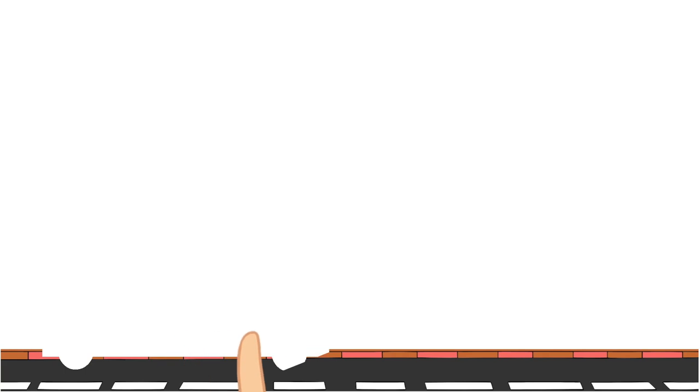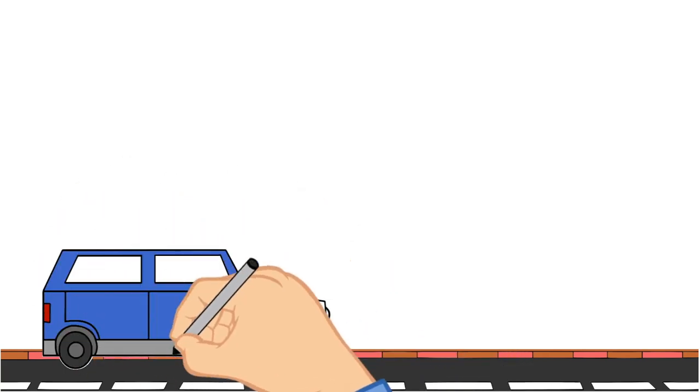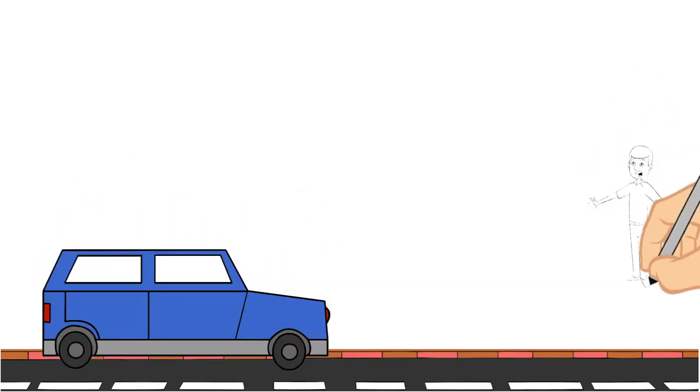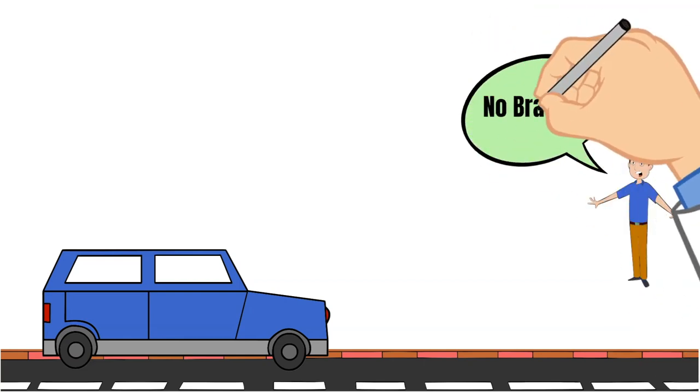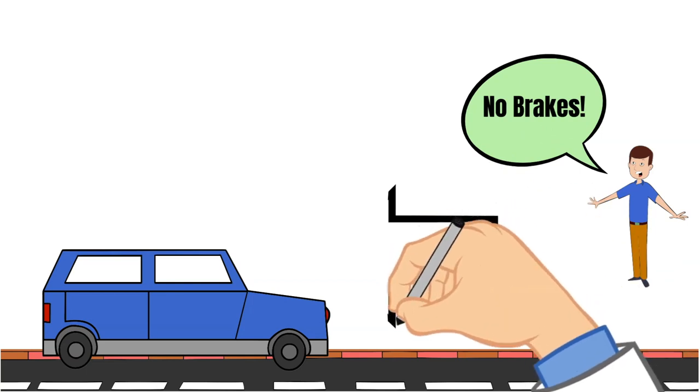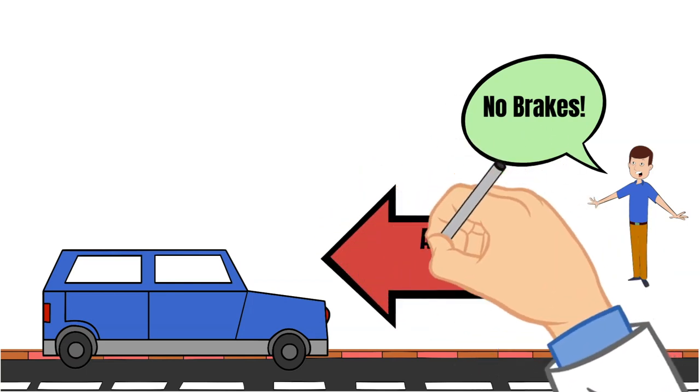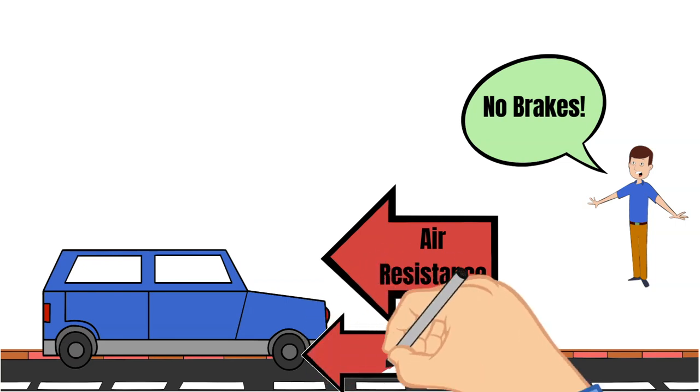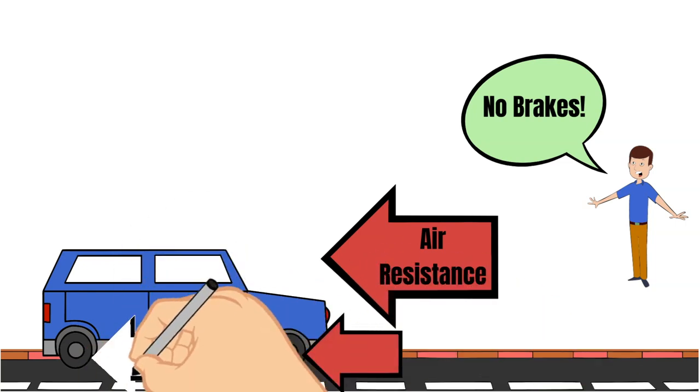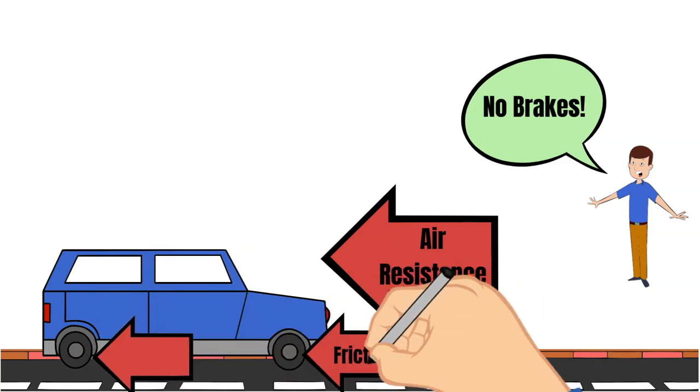So even if a car does not have any brakes on it it will eventually slow down because of the air resistance and the friction between the tires and the road acting against it. But keep in mind this will take quite a bit longer than if someone did have brakes on their car.